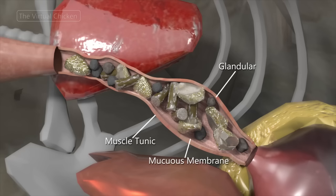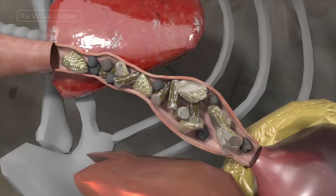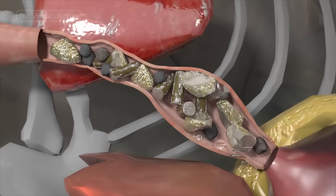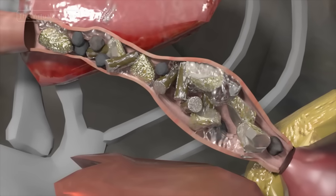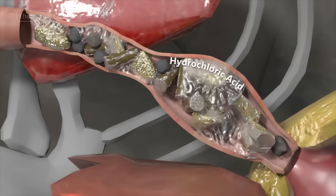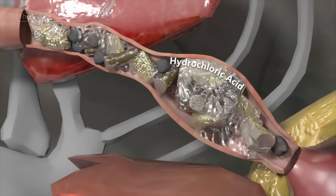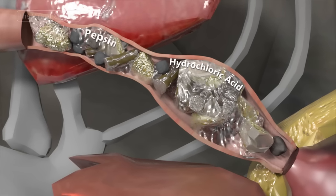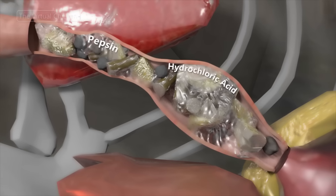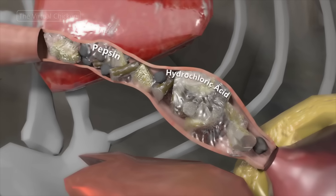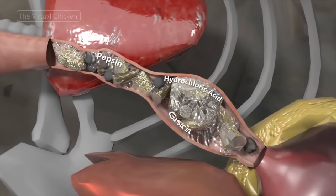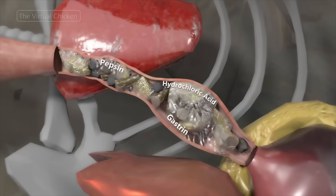The glandular tissue produces secretions which begin the process of digestion. These secretions include hydrochloric acid, which lowers the pH of the digestive system and food mixture, the enzyme pepsin, which helps break down protein, and the hormone gastrin, which stimulates gastric and pancreatic juice production.